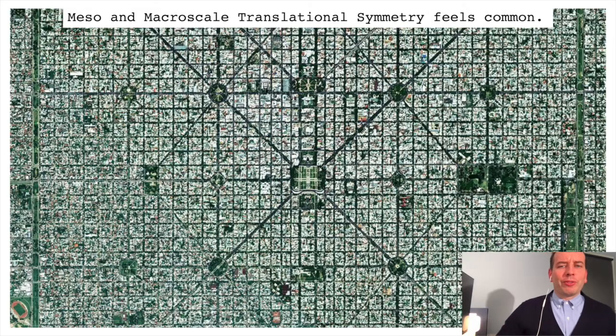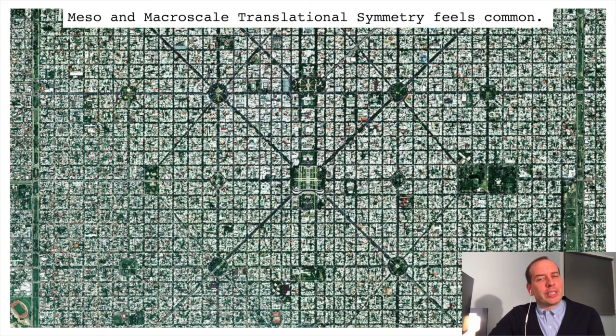So why does periodic order feel so common to us at larger length scales? It's because we do experience periodic order at the meso and the macro scale. However, it's a signature of human design. This is a picture of La Plata in Argentina. It's a city with periodic order from end to end, and it's made by design with careful measurement and templating.